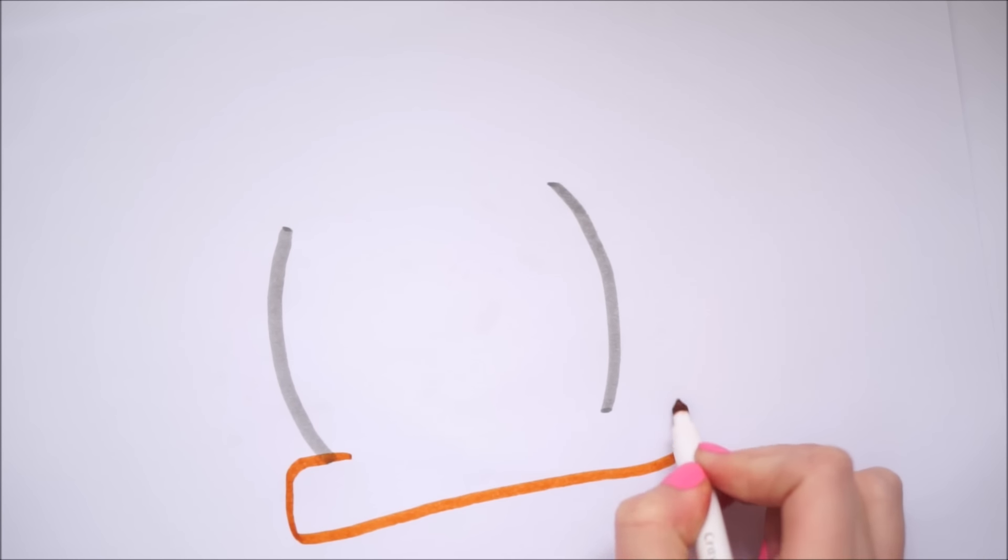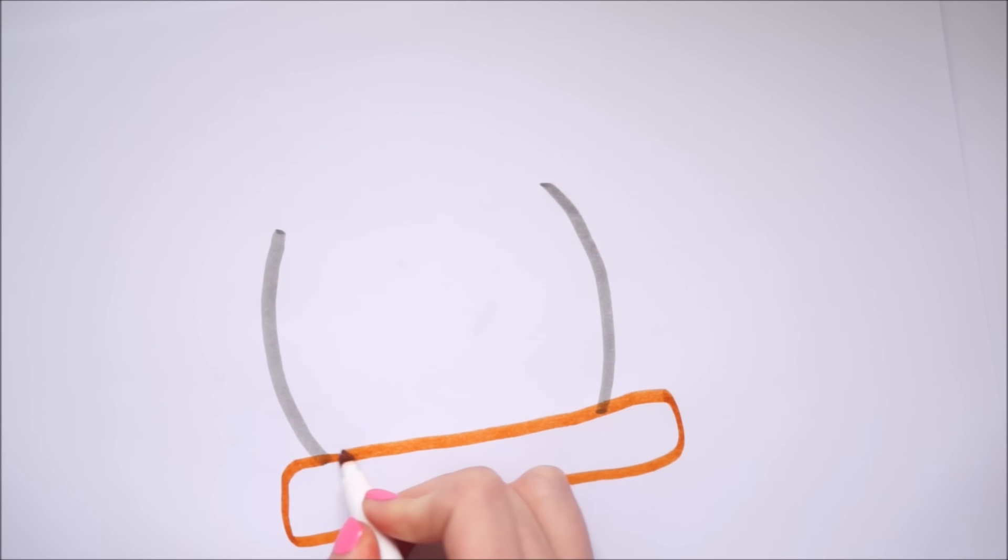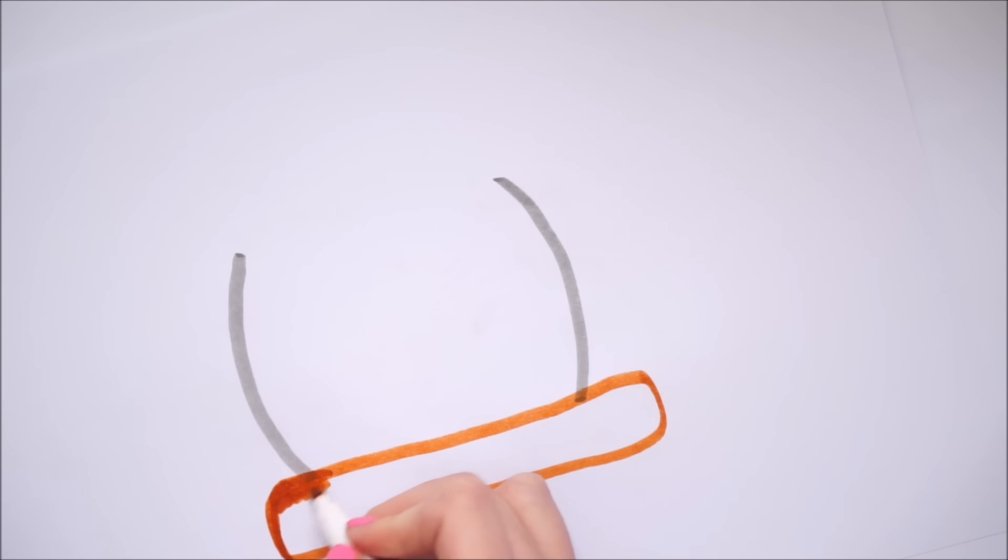I started off by taking a grey felt tip pen and just drew out two rounded lines. I then took a medium brown colored shade and drew a kind of wonky rectangle along the bottom of this shape, and I colored this in with the light brown color.